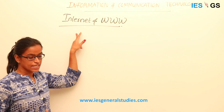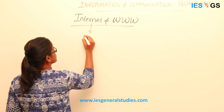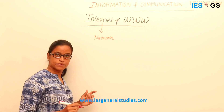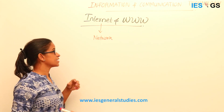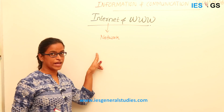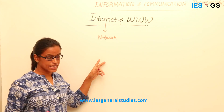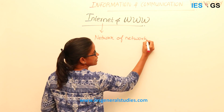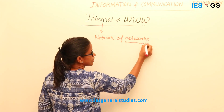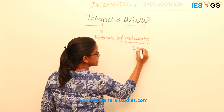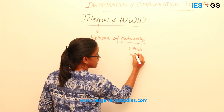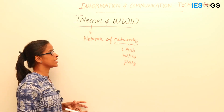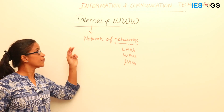Internet is nothing but a network. We saw different types of networks: LAN, WAN, etc. Internet is a WAN, a wide area network. It is a network of networks. The network here consists of different LANs, different WANs, and even personal area networks — different networks connected together form the internet.